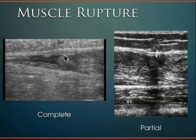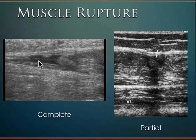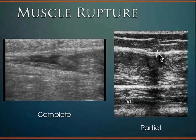An example of muscle rupture — a complete rupture: just like the tendon, you'll see the retraction or the stub of the actual muscle tissue where it should be connected but there's obvious disruption. Fascial planes are visible, and the muscle tissue is retracted back. In a partial tear, you'll see maintenance of the connective tissue fascial planes but intrasubstance partial tearing of the muscle — disruption and localized hematoma.